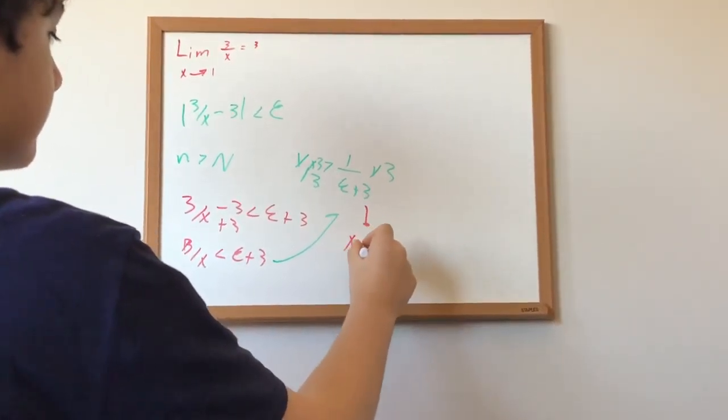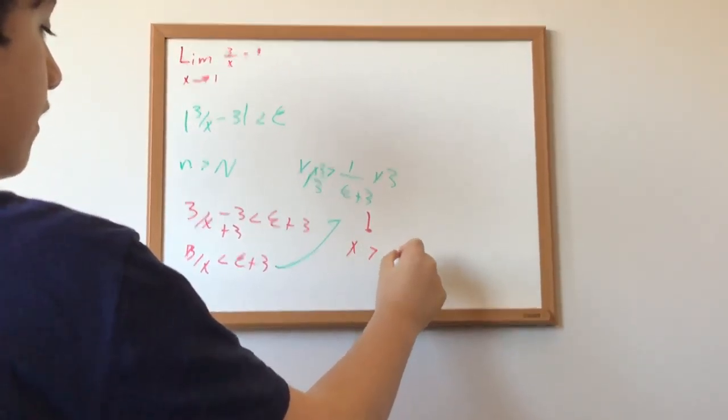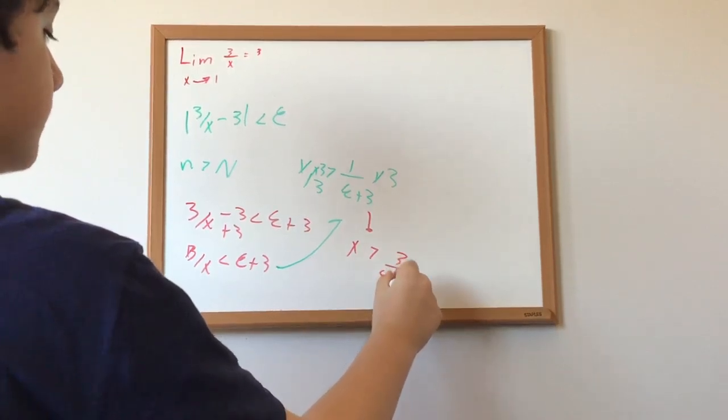And finally, we get x is greater than 3 over epsilon plus 3.